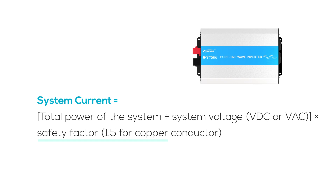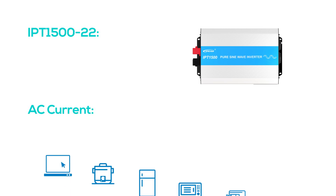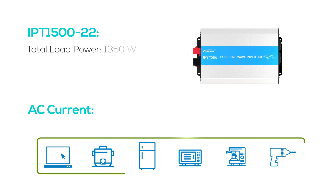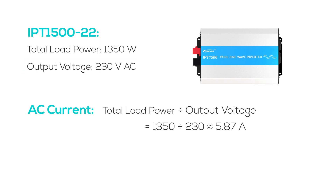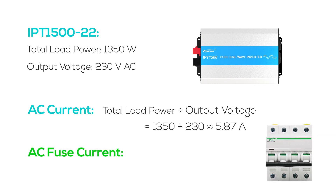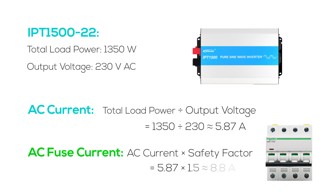The resulting figure should be multiplied by a safety factor — typically 1.5 for copper — to account for slight overloads. For the AC current calculation: if total load consumption is 1350 watts and AC voltage is 230 volts, the AC current is 5.87 amperes — simply divide total load power by output voltage. For the AC fuse, we recommend one that can handle 8.8 amperes, which is 1.5 times the AC current of 5.87 amperes.